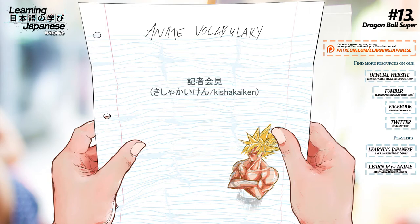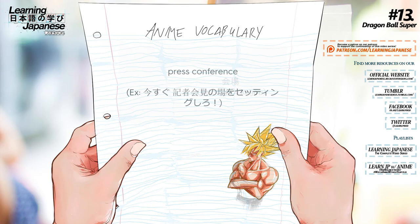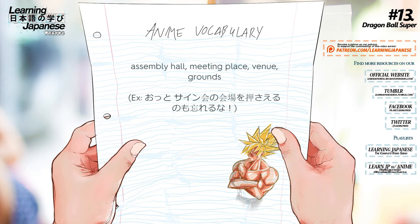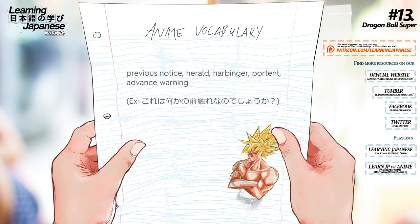記者会見 — Press conference. 会場 — Assembly hall, meeting place, venue, ground. 前触れ — Previous notice, herald, harbinger, portent, advance warning.